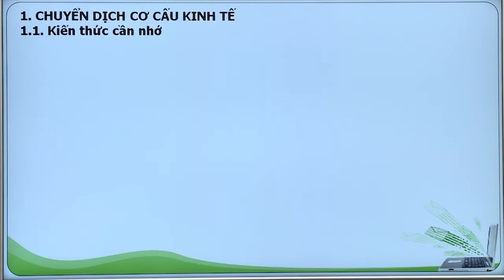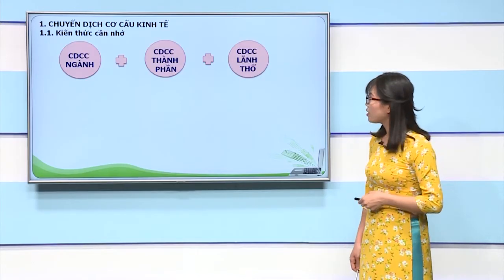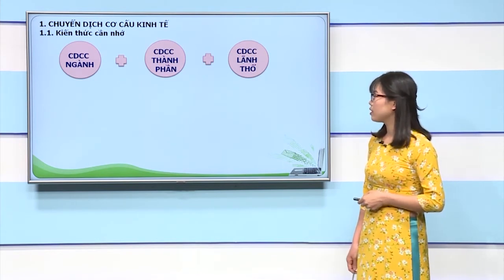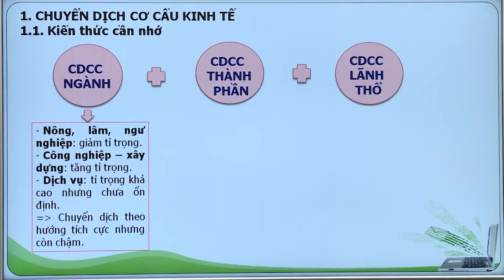Chúng ta đi vào nội dung thứ nhất: chuyển dịch cơ cấu kinh tế. Chuyển dịch cơ cấu kinh tế là nét đặc trưng của quá trình đổi mới, thể hiện ở 3 mặt chủ yếu: chuyển dịch cơ cấu ngành, chuyển dịch cơ cấu thành phần và chuyển dịch cơ cấu lãnh thổ. Về chuyển dịch cơ cấu ngành, ngành nông, lâm, ngư nghiệp có xu hướng giảm tỷ trọng giá trị GDP; ngành công nghiệp xây dựng có xu hướng tăng tỷ trọng; ngành dịch vụ chiếm tỷ trọng khá cao nhưng chưa ổn định. Cơ cấu ngành kinh tế đang chuyển dịch theo hướng tích cực, tuy nhiên tốc độ chuyển dịch còn chậm.